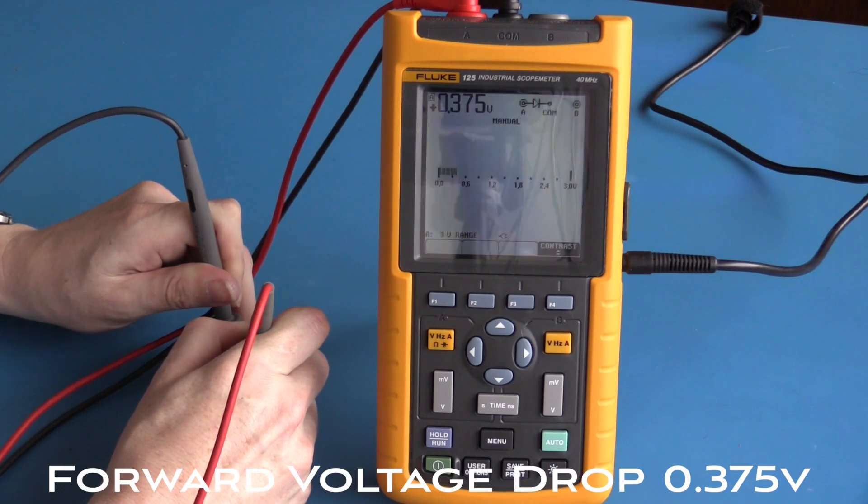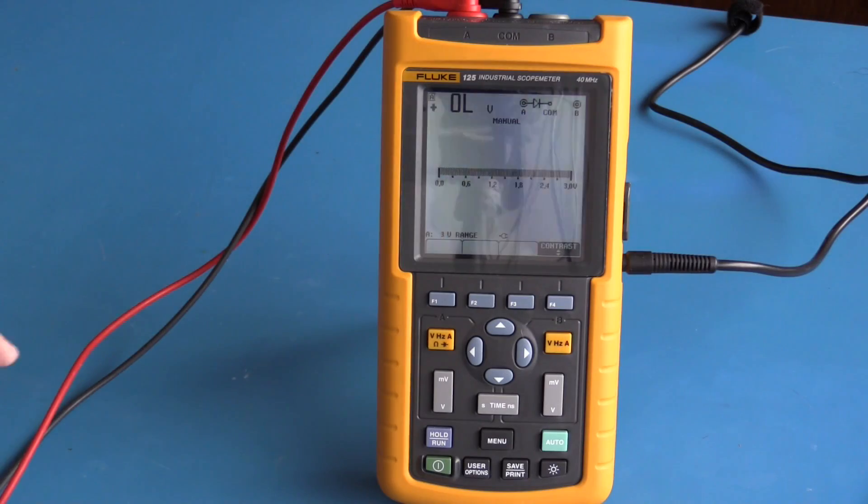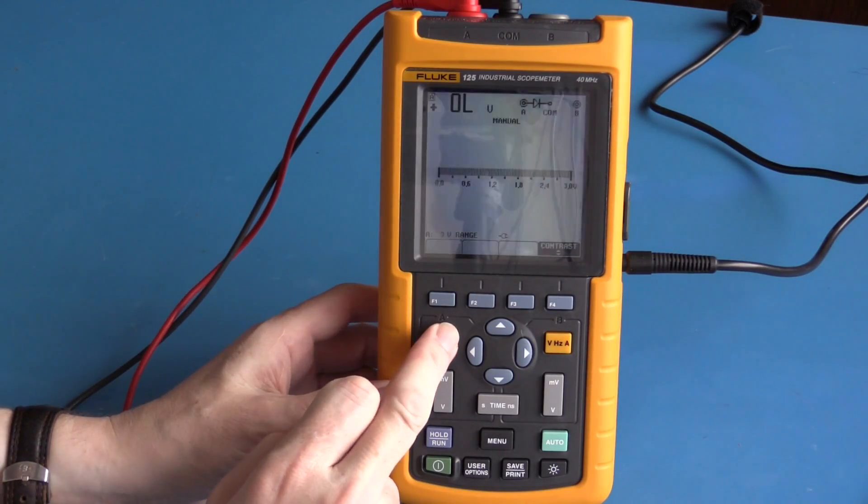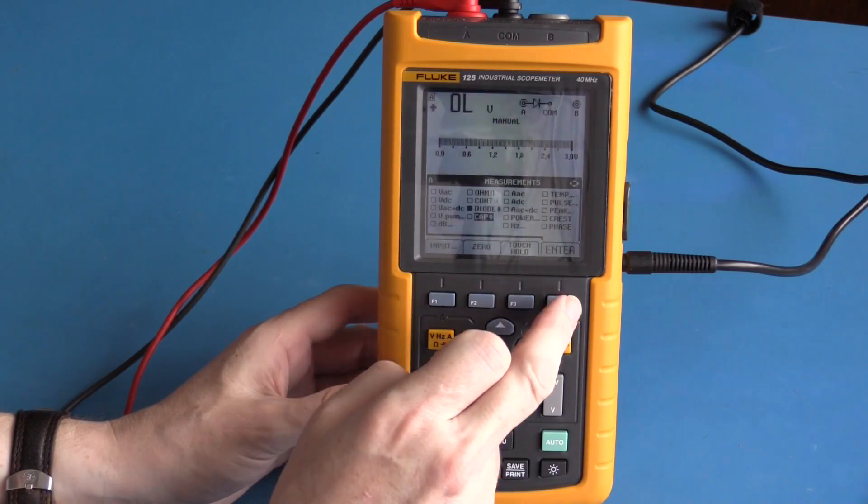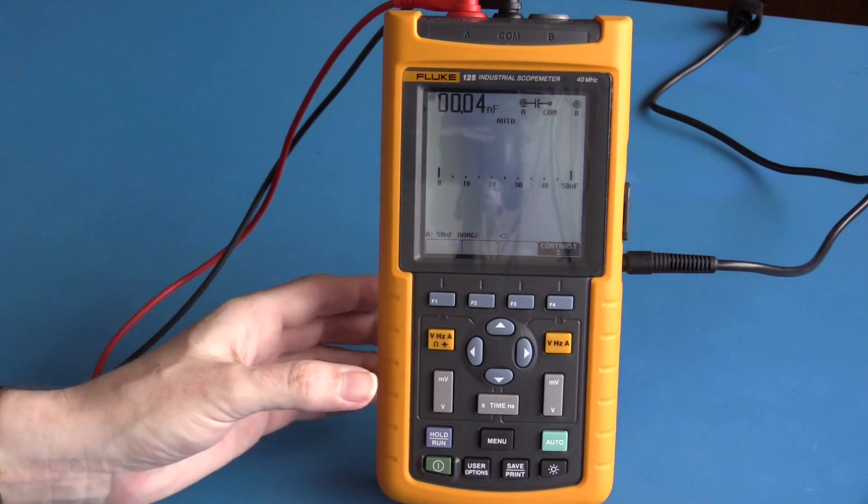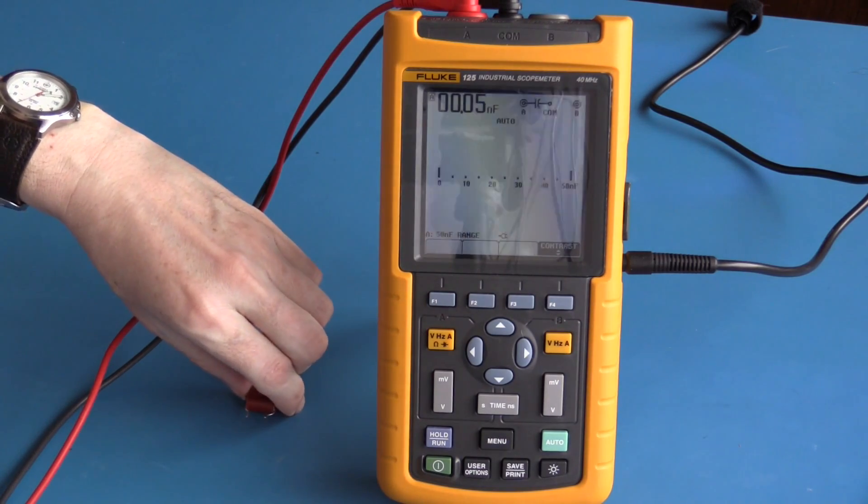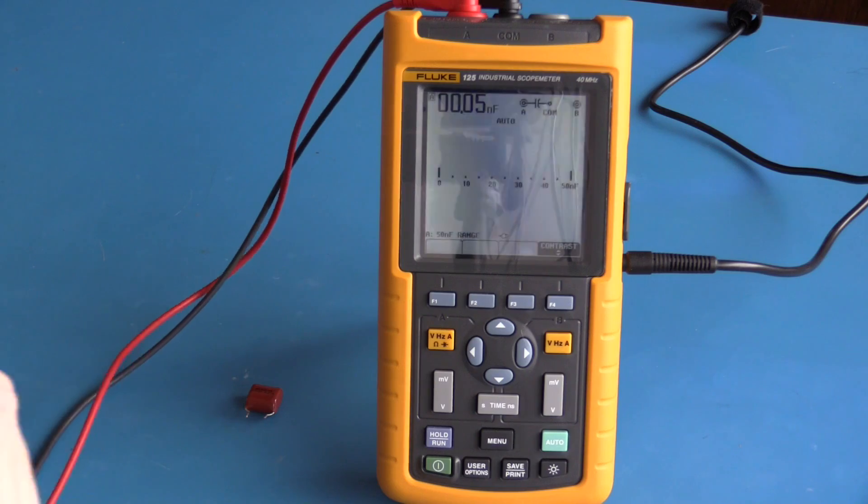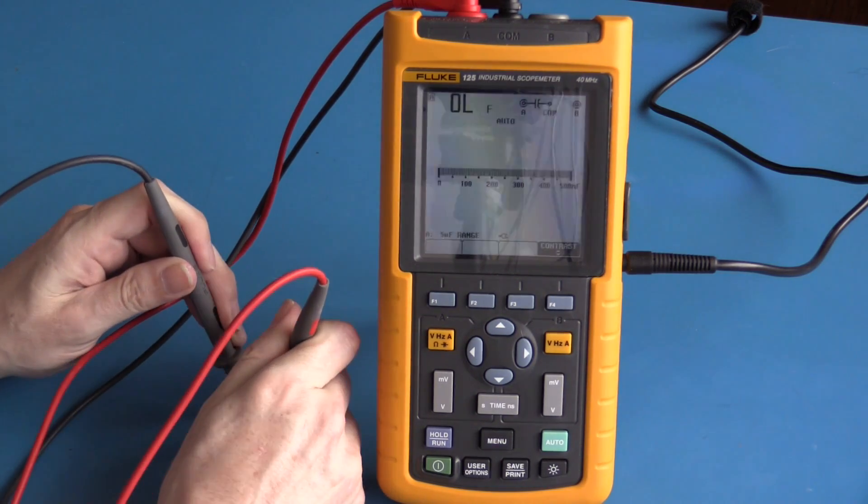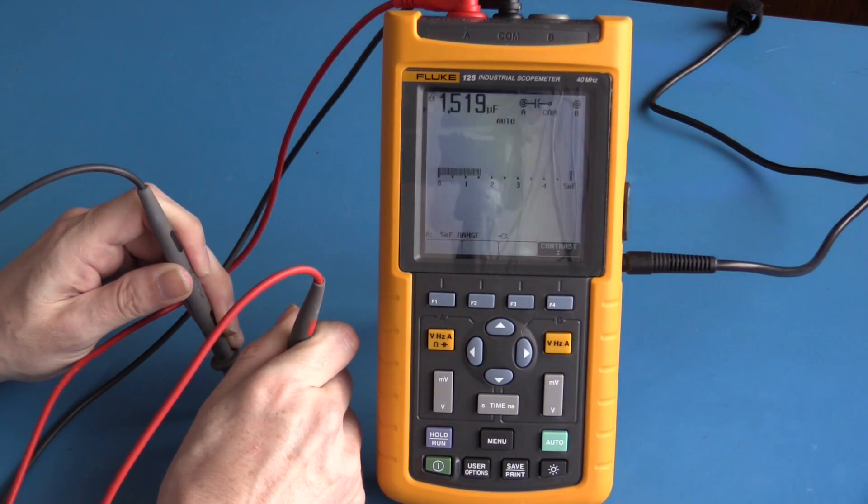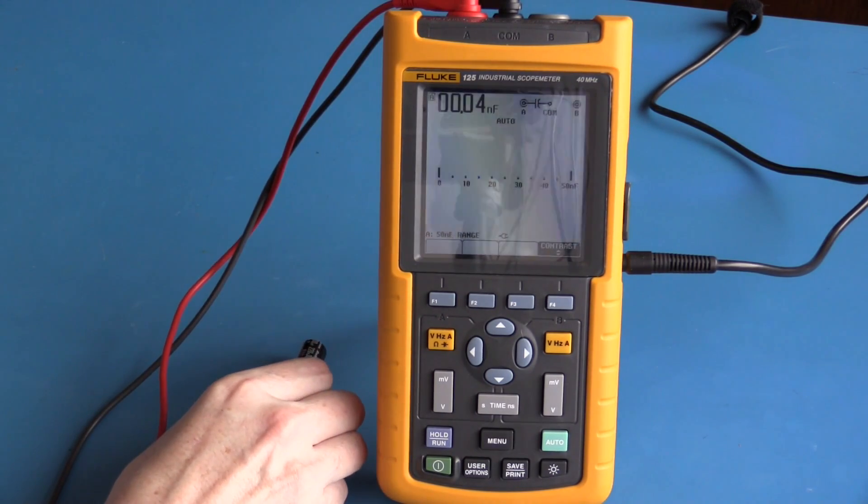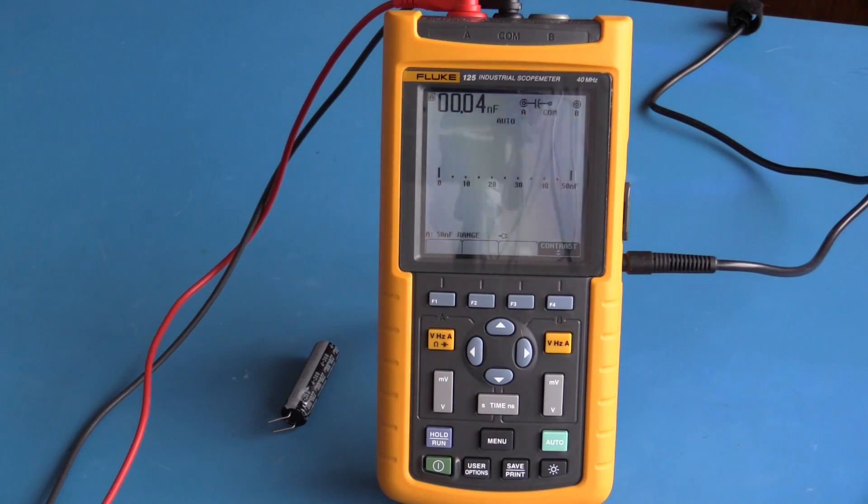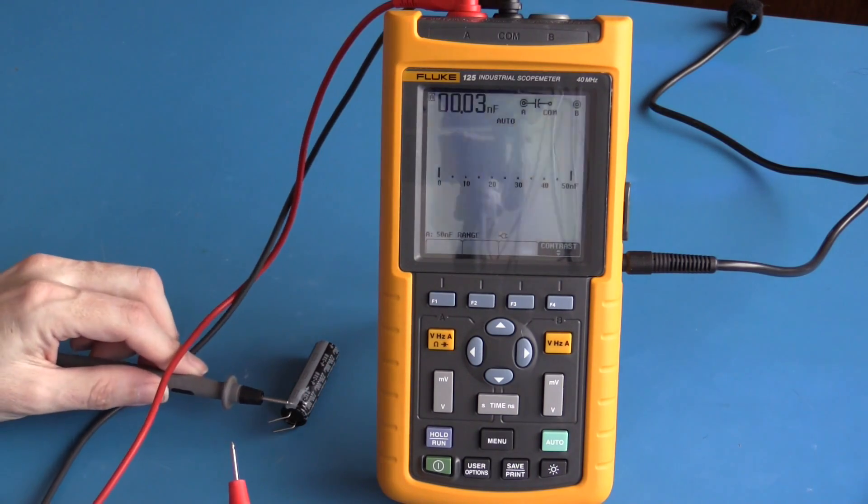We can see we have a forward voltage drop of 3.75 volts. To test capacitance, this capacitor is non-polarized so it does not matter which way around we place the leads. We get a reading of approximately 1.5 microfarads. This is an electrolytic capacitor which is polarized, so the negative lead must go on the negative terminal, positive lead on the positive terminal, and we have a reading of approximately 278 microfarads.